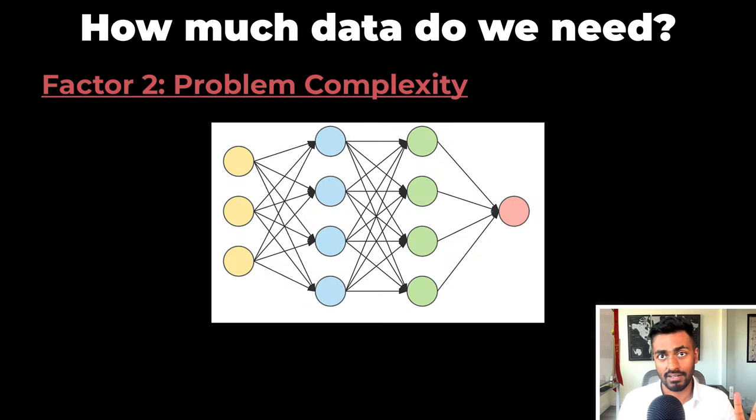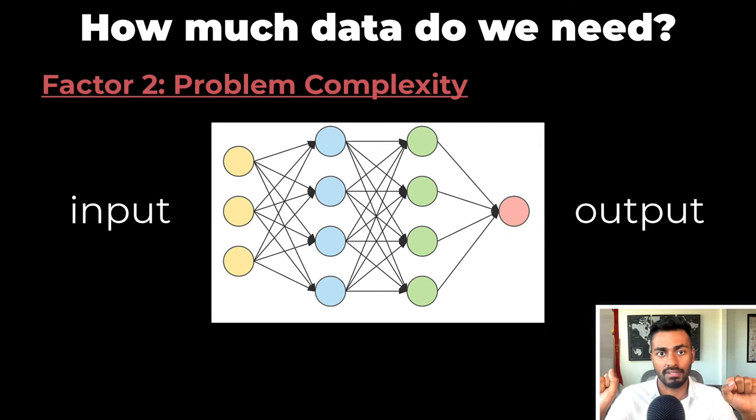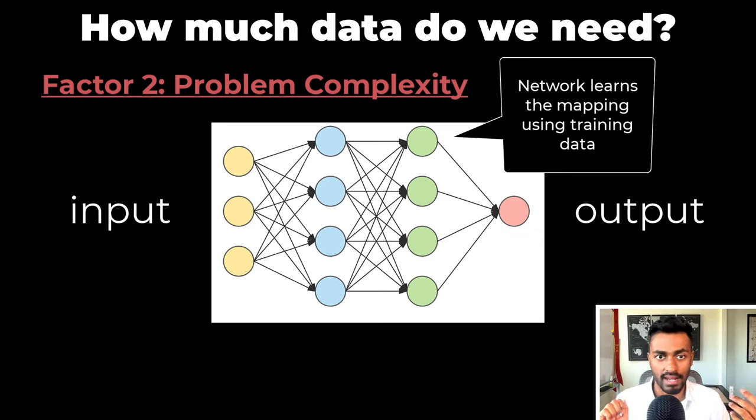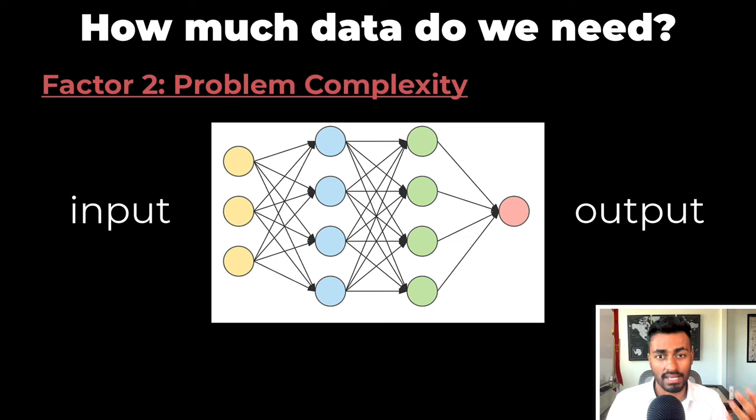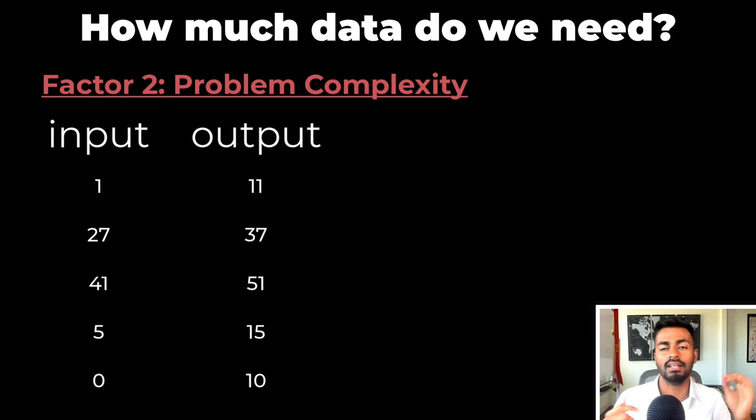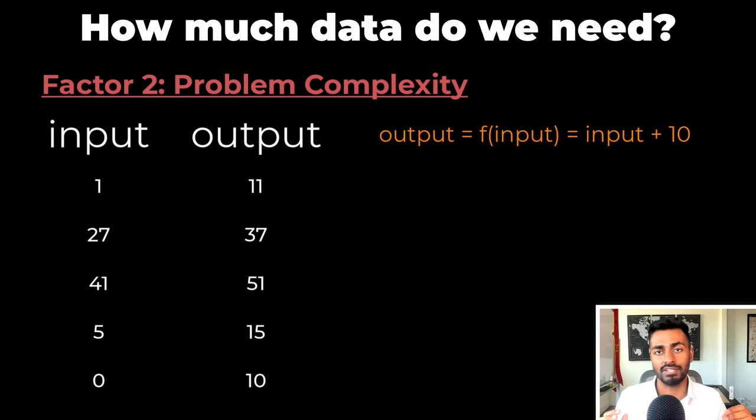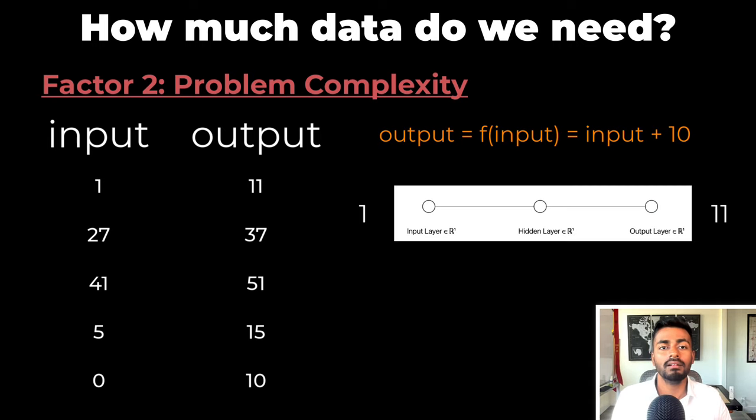The second factor is problem complexity. Neural networks, at least from a supervised learning perspective, need to learn how to map inputs to outputs. They learn this mapping using training data, and sometimes this mapping is easy to learn. To illustrate this, let's take a trivially simple example where the network input is the age of a person in years, and the network output should be the age of a person in 10 years. This can be solved with a simple function that just adds 10 to the input, of course. But we can also train a neural network to solve this problem, and we probably just need a handful of examples.